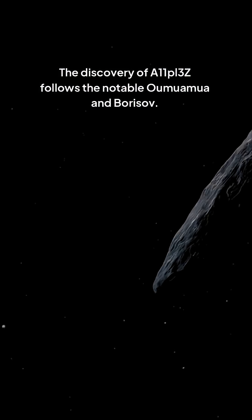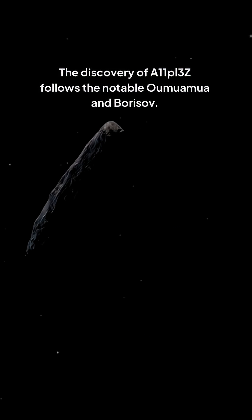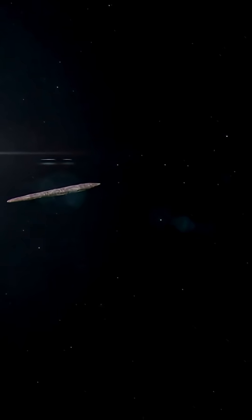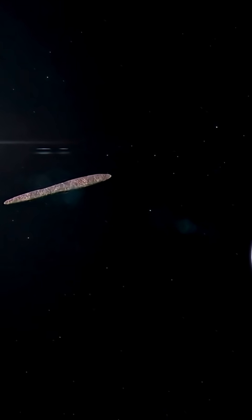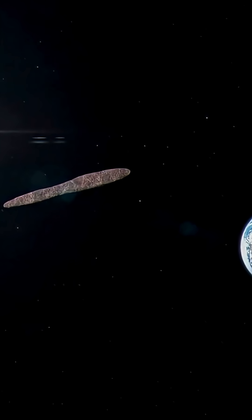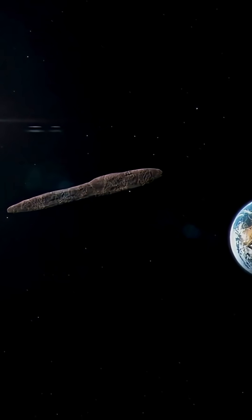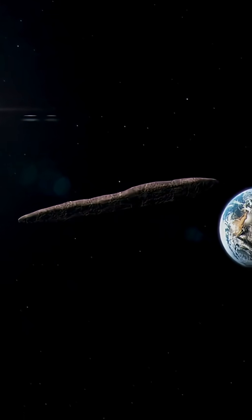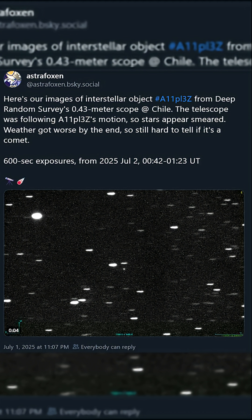The discovery of A11PL3Z follows the notable Oumuamua and Borisov. Oumuamua was the first interstellar object found in 2017, causing significant discussion due to its shape and rapid exit from our solar system. Borisov followed in 2019, enriching our understanding of interstellar objects.